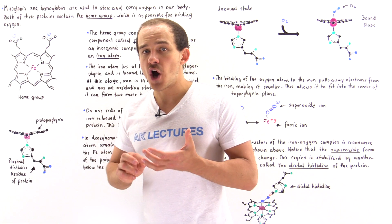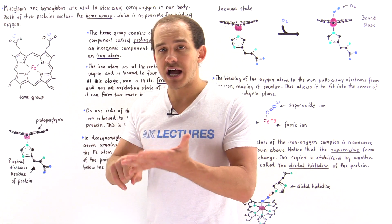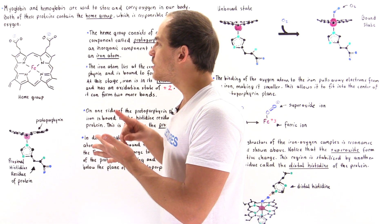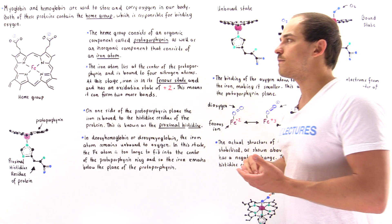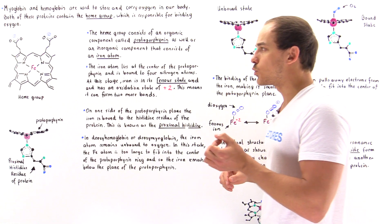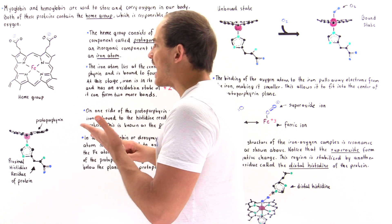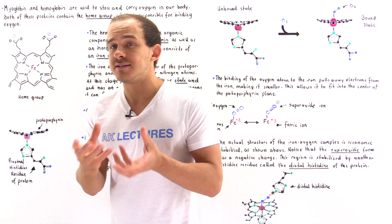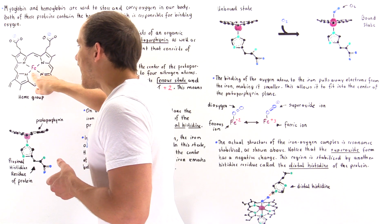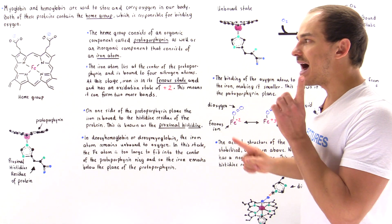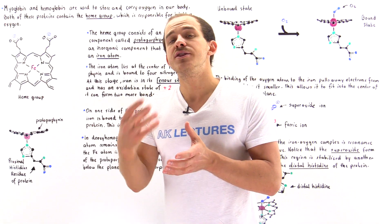It has the organic component known as protoporphyrin that contains the carbon atoms, the nitrogen atoms, the hydrogen atoms, and the oxygen atoms. This entire region shown in black is the protoporphyrin — it's the organic component of that heme group. At the center of that protoporphyrin is an inorganic metal atom, the iron atom, and this is what makes up the inorganic component of that heme group.